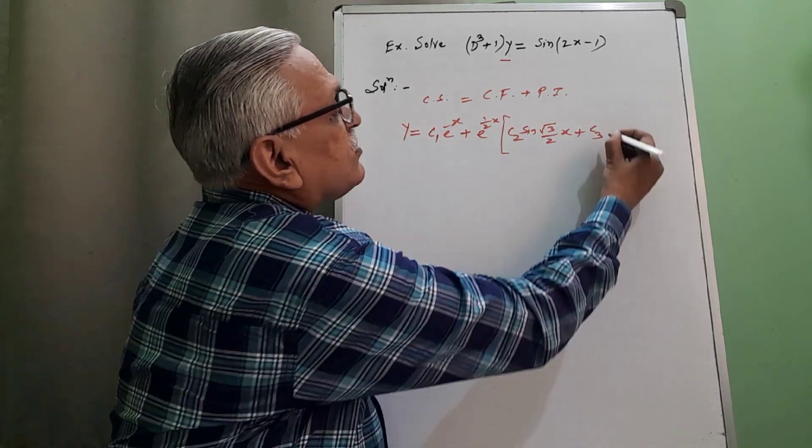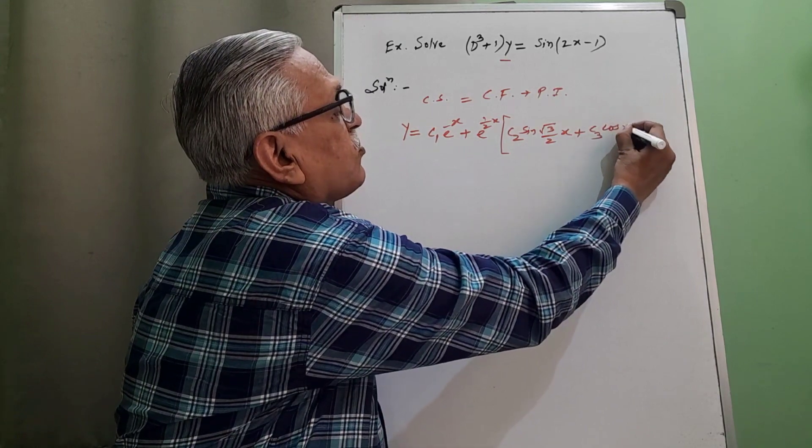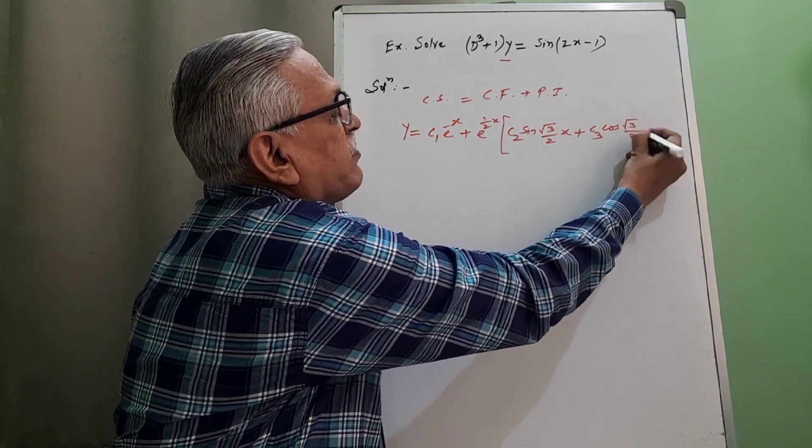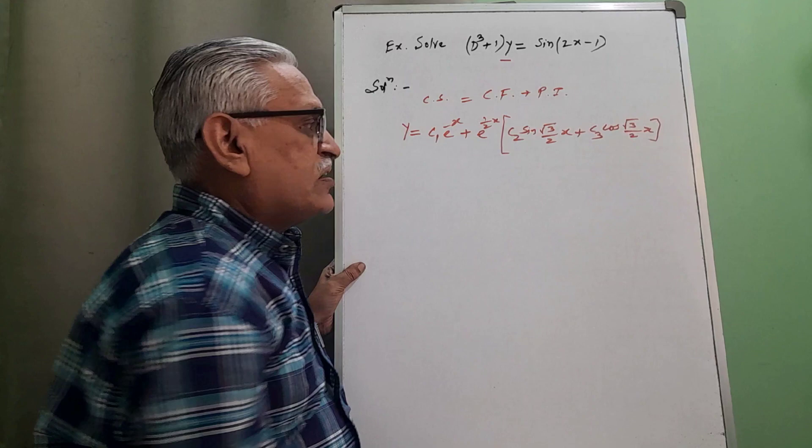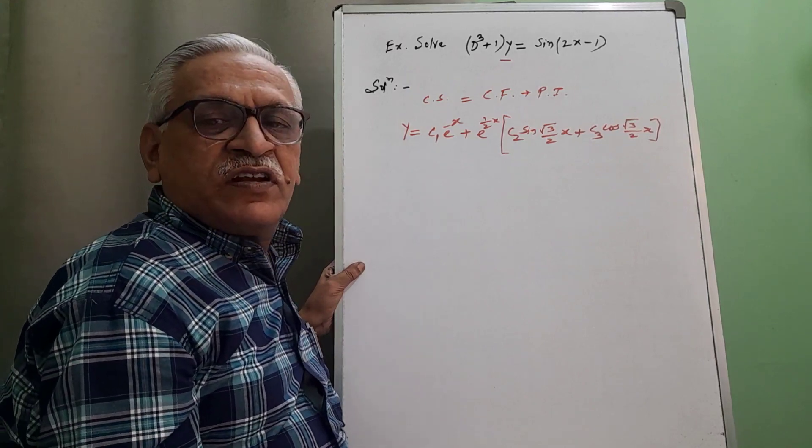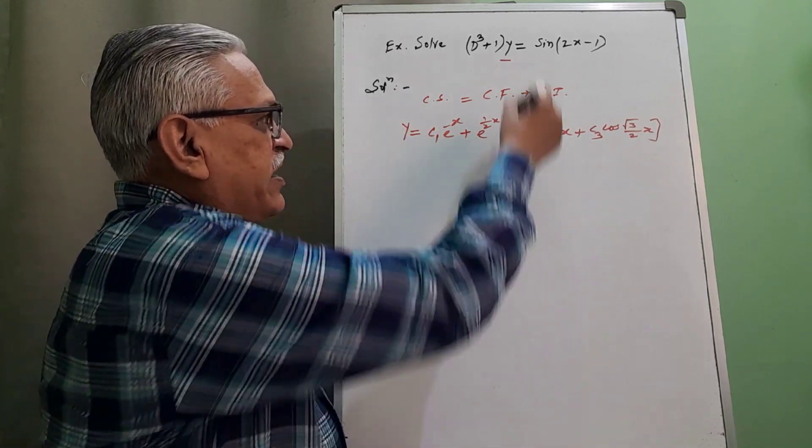C3 cos of root 3 by 2 x. This is equation number 1. And then PI.